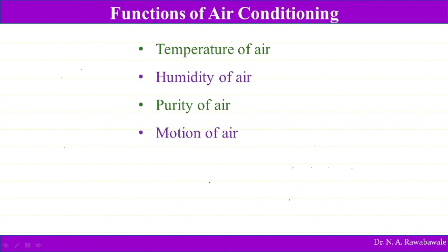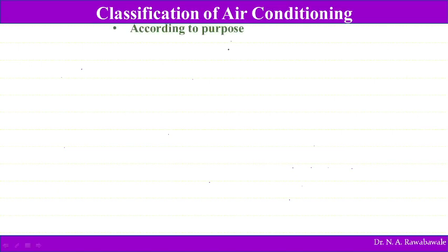Depending on the purpose for which air conditioning is used, these four parameters — temperature, humidity, purity, and motion of air — are maintained. If the space is for human comfort, these are specified in a particular range. Sometimes air conditioning is required for industrial purpose, or to store grains or fruits, where humidity, temperature, purity, and motion of air play very important roles in maintaining the conditions.